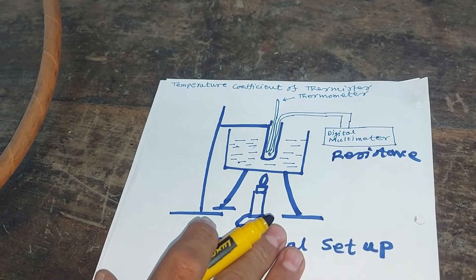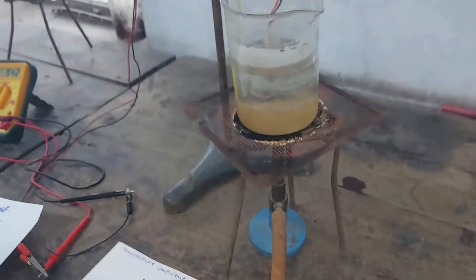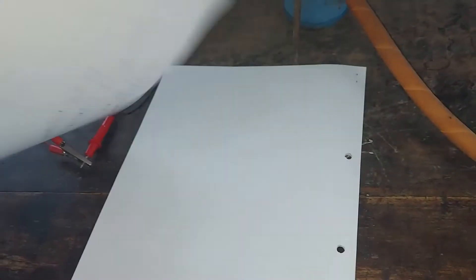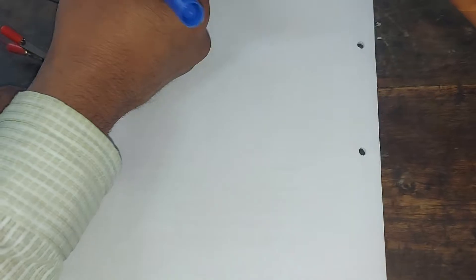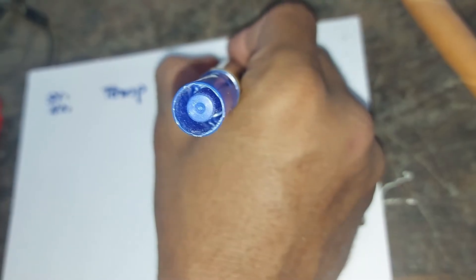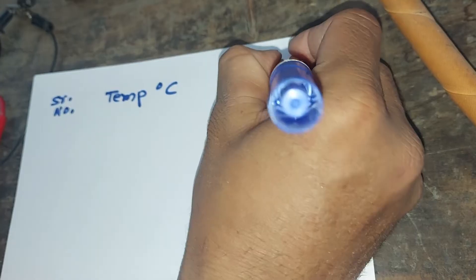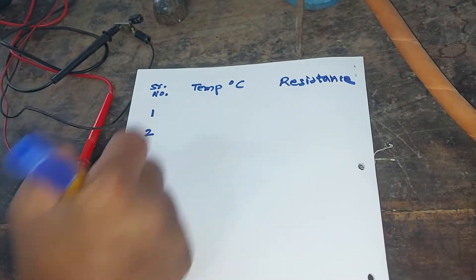What we have to do is first of all note down the room temperature — I will call this room temperature T0. We have to make a table. The table will have a serial number, then we note down the temperature in degree centigrade, and then we note down the resistance value at those different temperatures. The serial numbers will be 1, 2, 3, and so on.